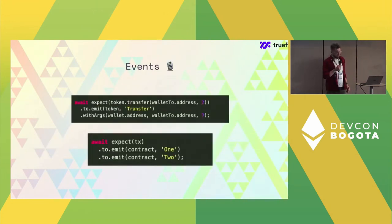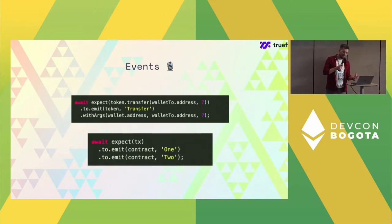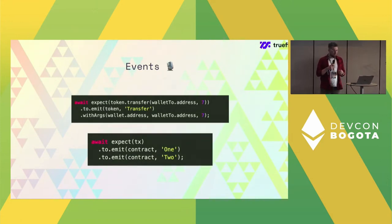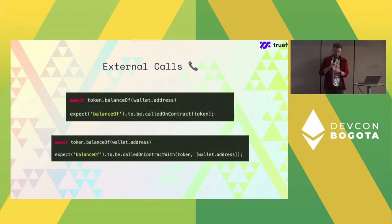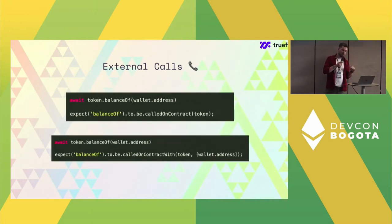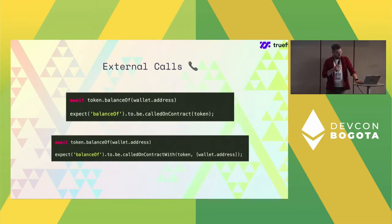We can test that some transaction emits an event with particular arguments, or emits multiple events. We can also test external calls — a simple case is calling a function and expecting it to be called, but advanced use cases let us check whether a particular contract within the entire call stack was called by another contract with specific arguments, which is quite powerful for checking complex cases of many smart contract interactions.